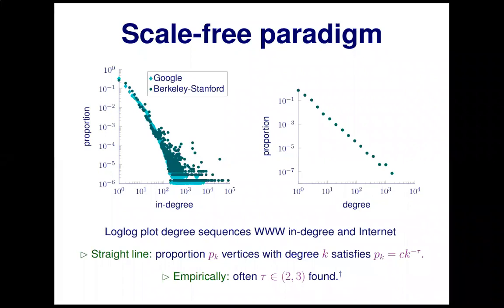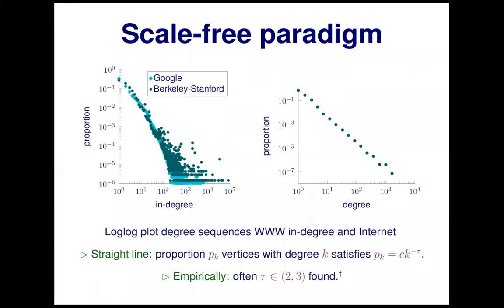We've drawn these pictures in a log-log plot style, which is common in many applied papers on network science. In a log-log plot, many of these pictures start looking like a straight line. A perfect straight line would mean that the proportion P_K of vertices of degree K satisfies P_K equals a constant times an inverse power of K. This decays when K tends to infinity, but fairly slowly, so that in a very large network you still see vertices of pretty large degree.